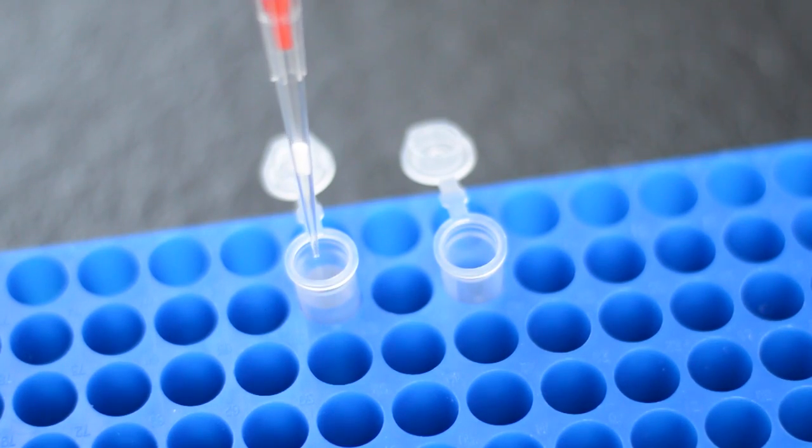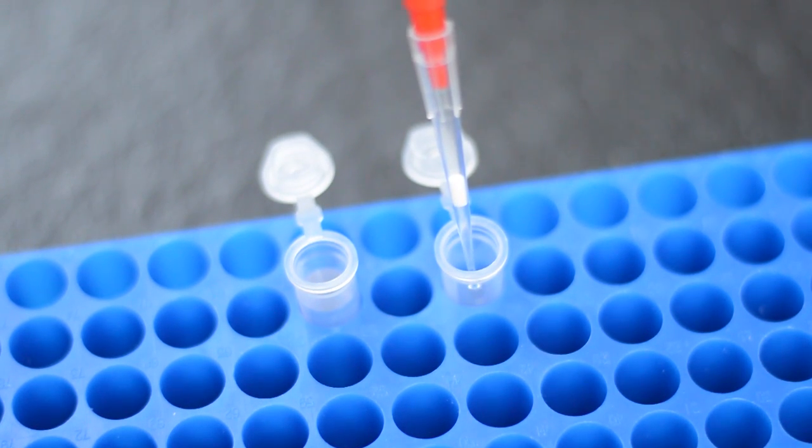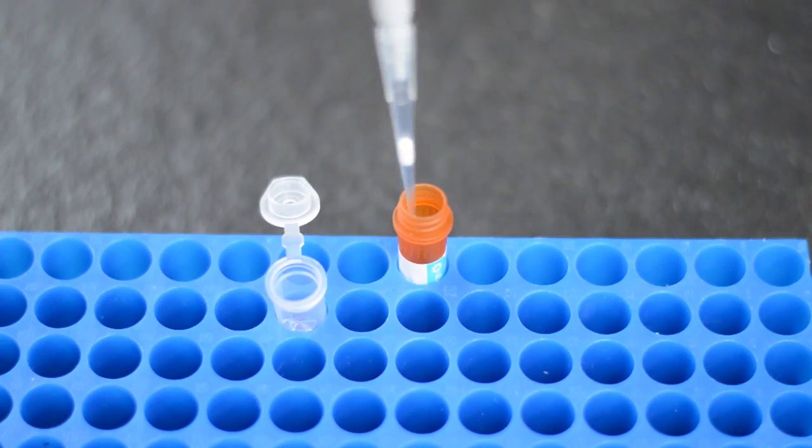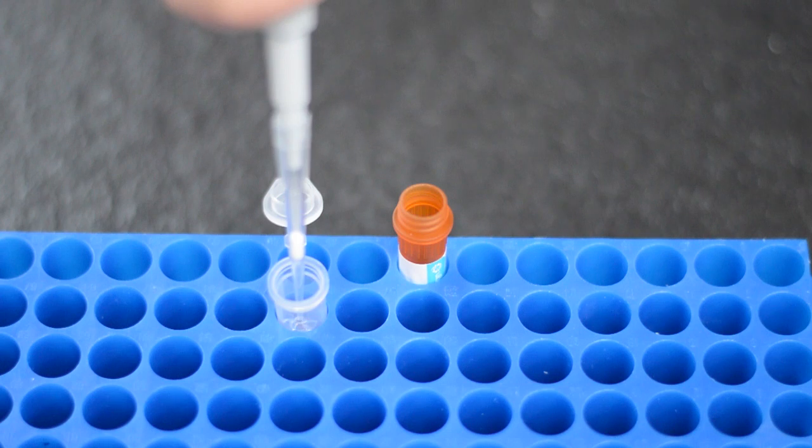The kit can handle just about any starting material, but for this demonstration we'll be using saliva. A small amount of saliva is combined with the liquid from bottle number 2, and a small amount of the internal extraction control DNA from the Genesig Kit that you're using is also added.